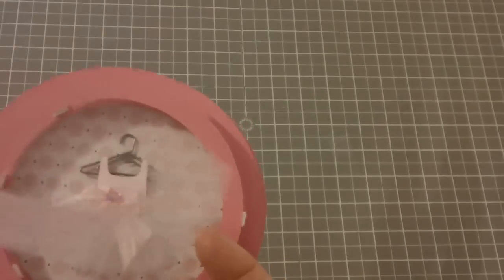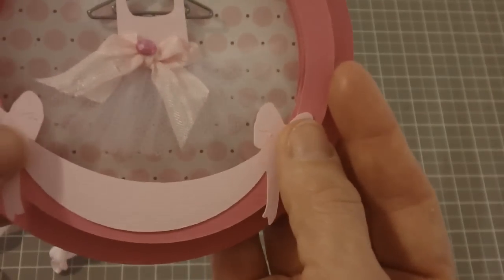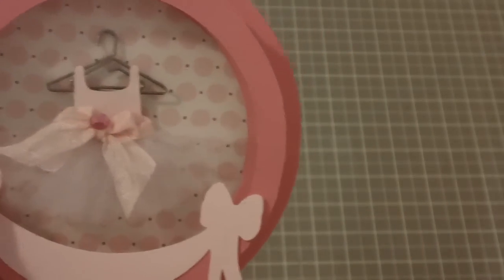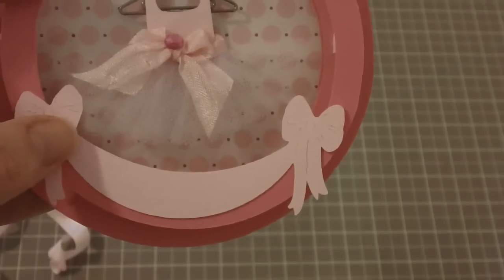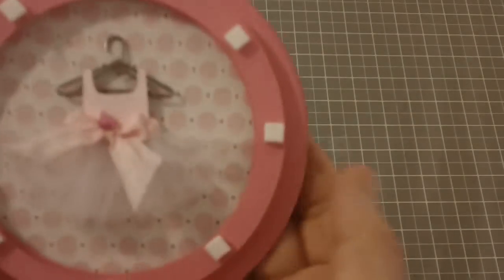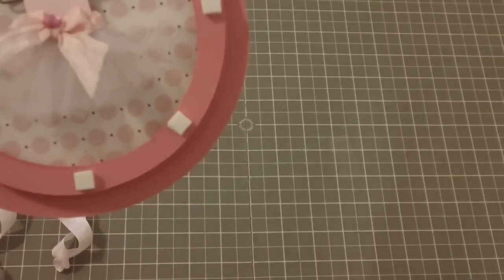So this banner that goes right here was from the preloaded Christmas cartridge on your Gypsy and that is cut out at 1.6 inches. And then the birthday bash Cricut cartridge is where this is from, the card base here from birthday bash, and that is cut out at five inches.